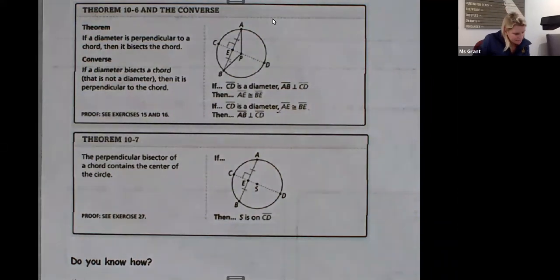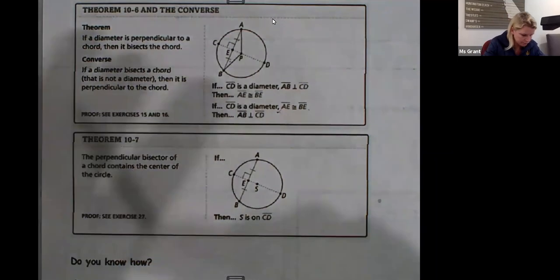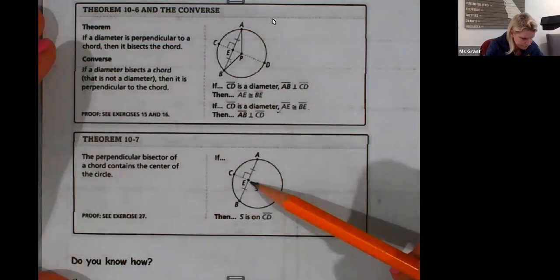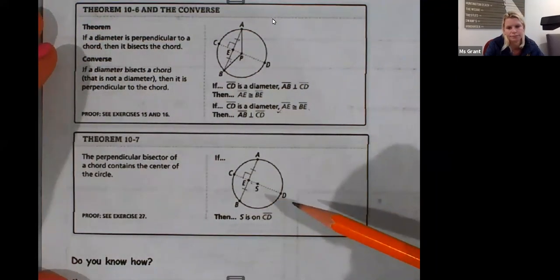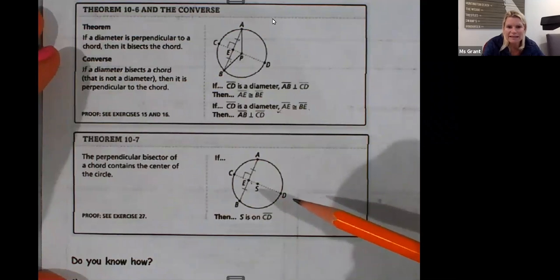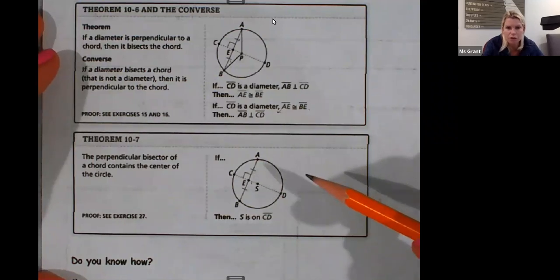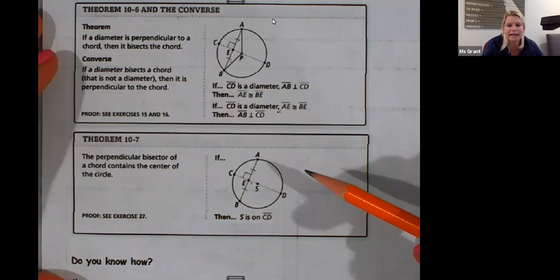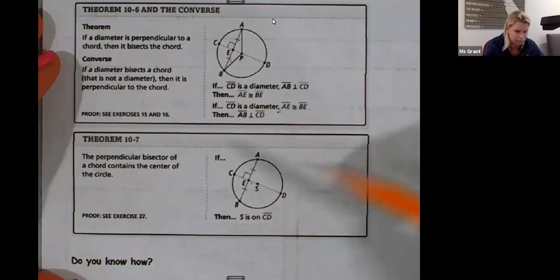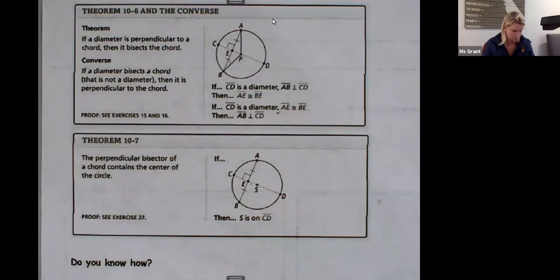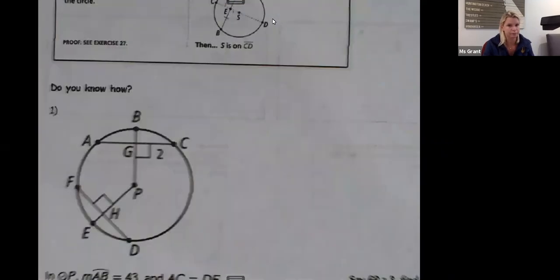10.7. The perpendicular bisector of a chord contains the center. If it bisects it, it must be in the middle of the circle. If a chord is bisected, the line must run through the center. That's obvious. Okay. All right. Here we go.